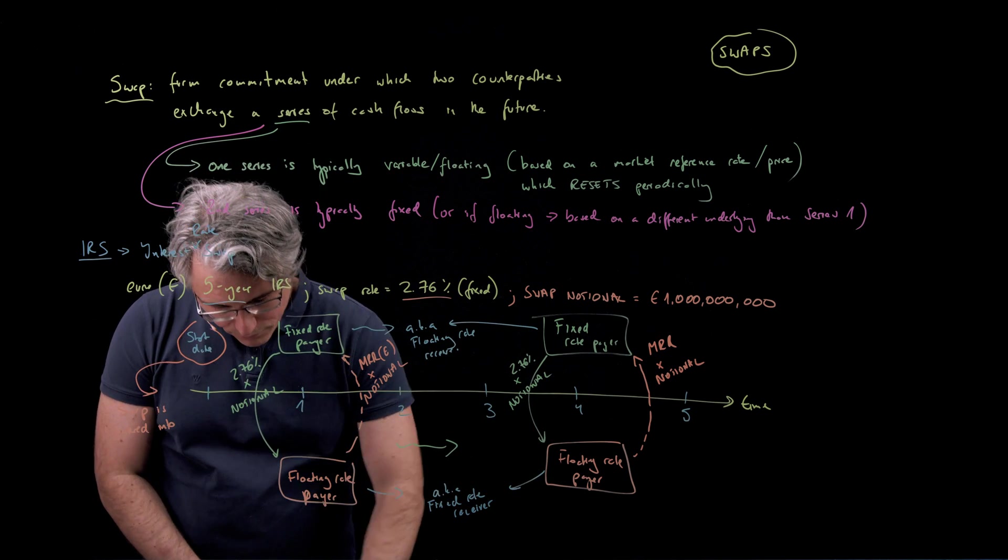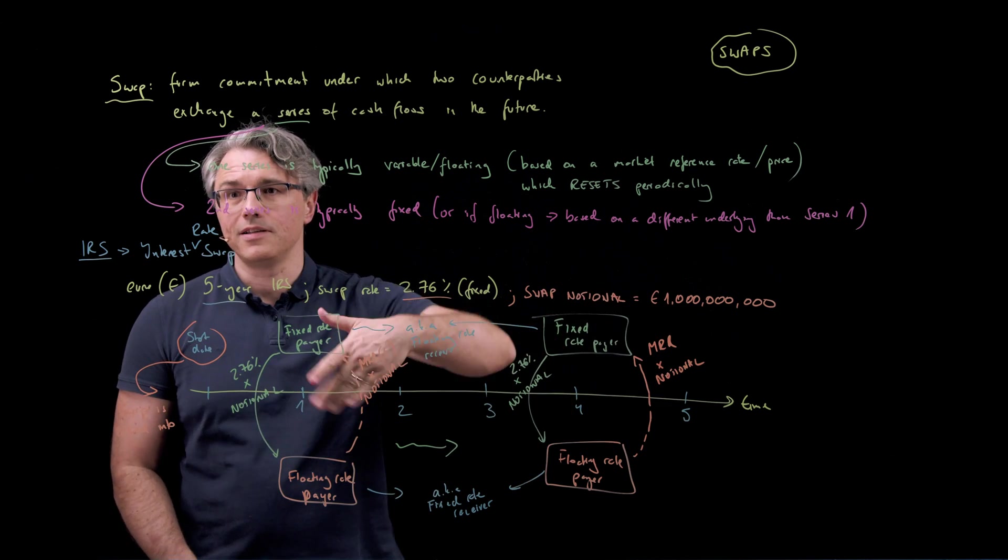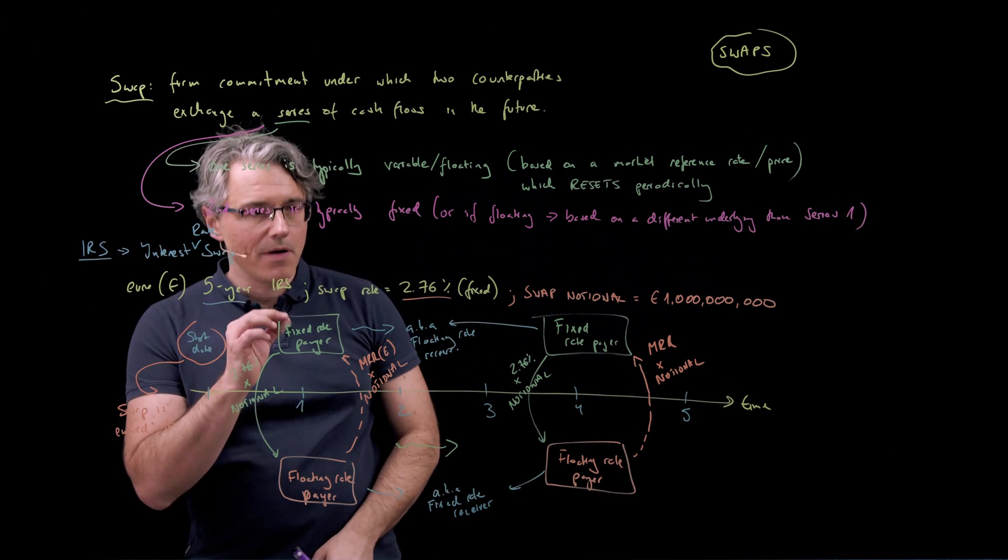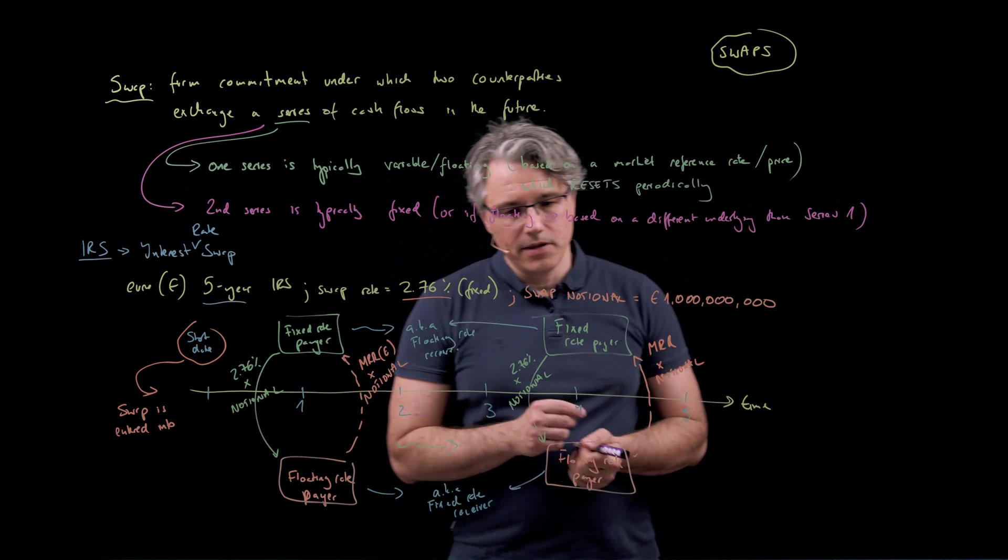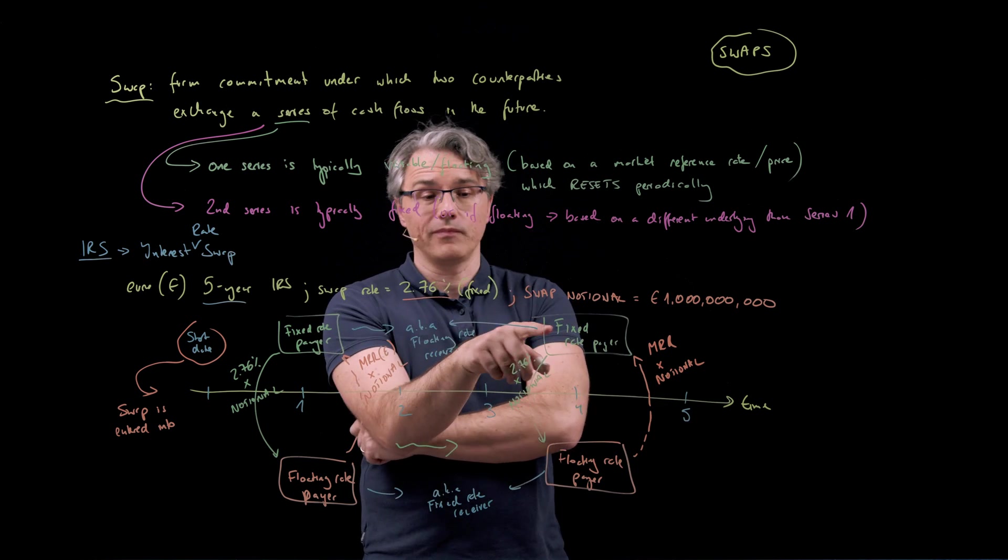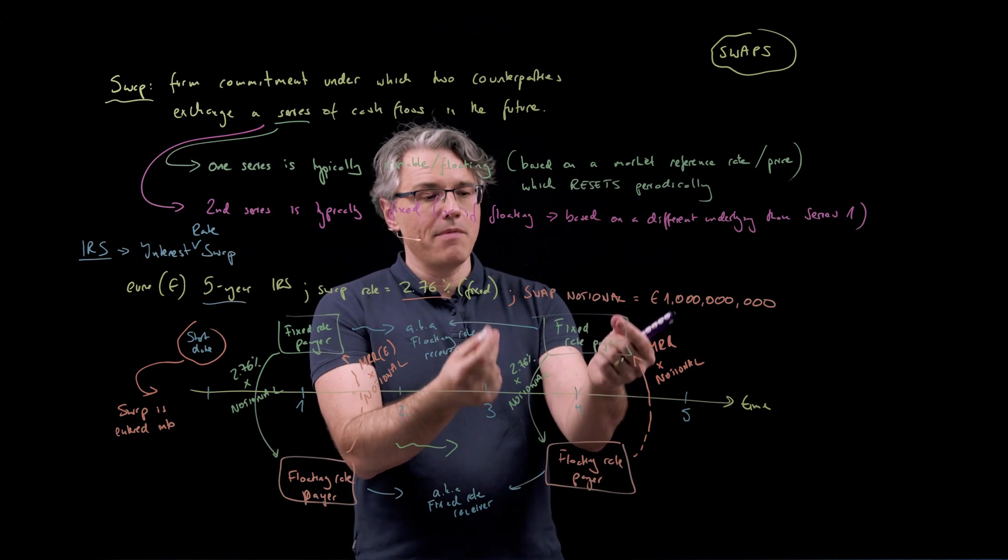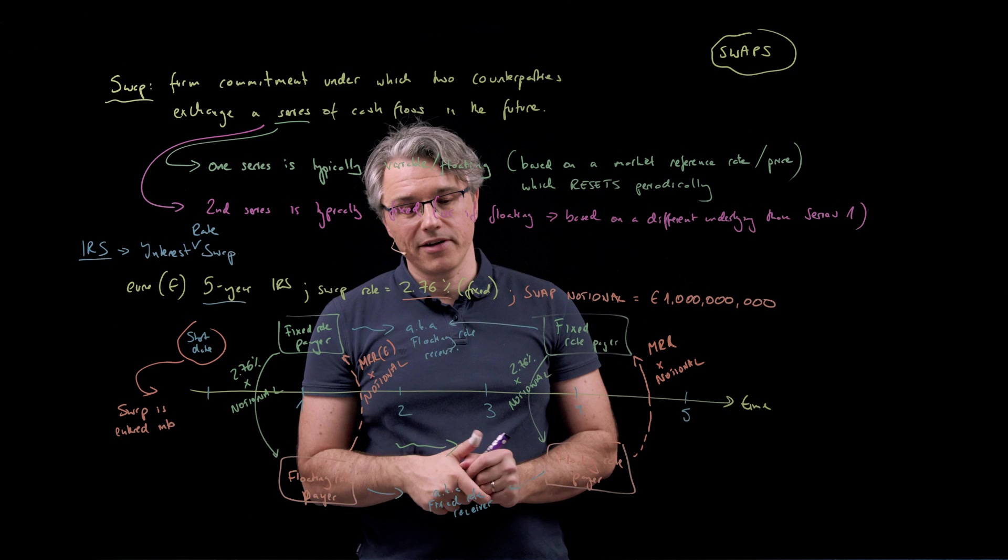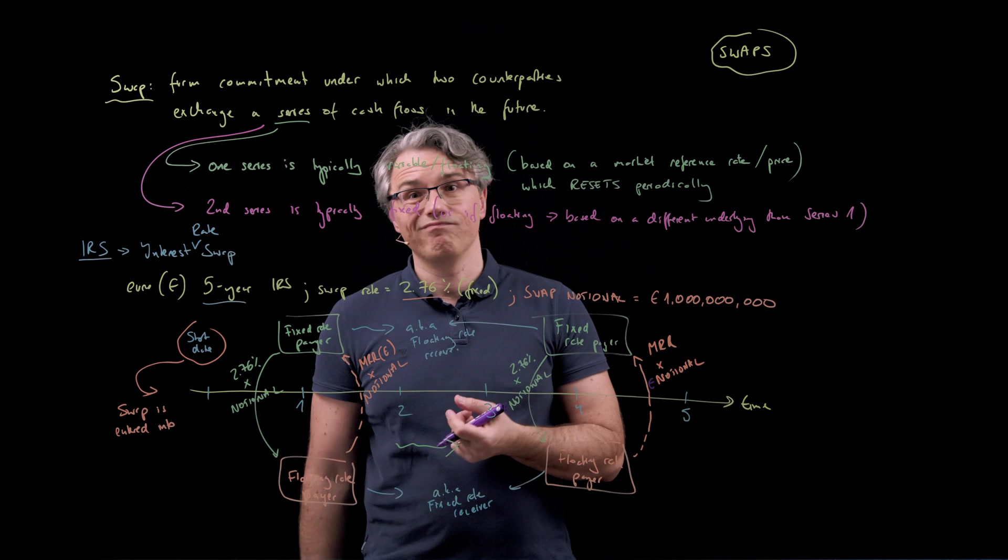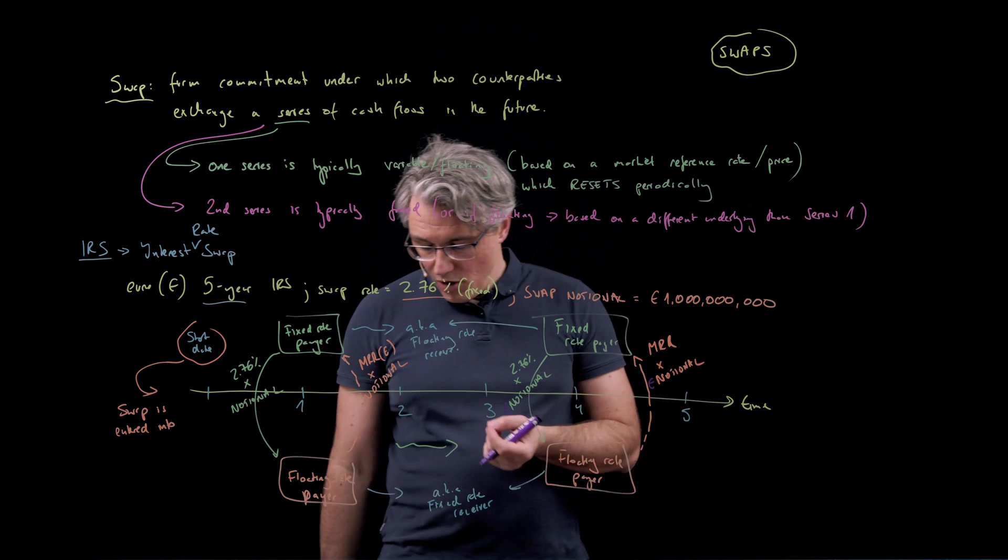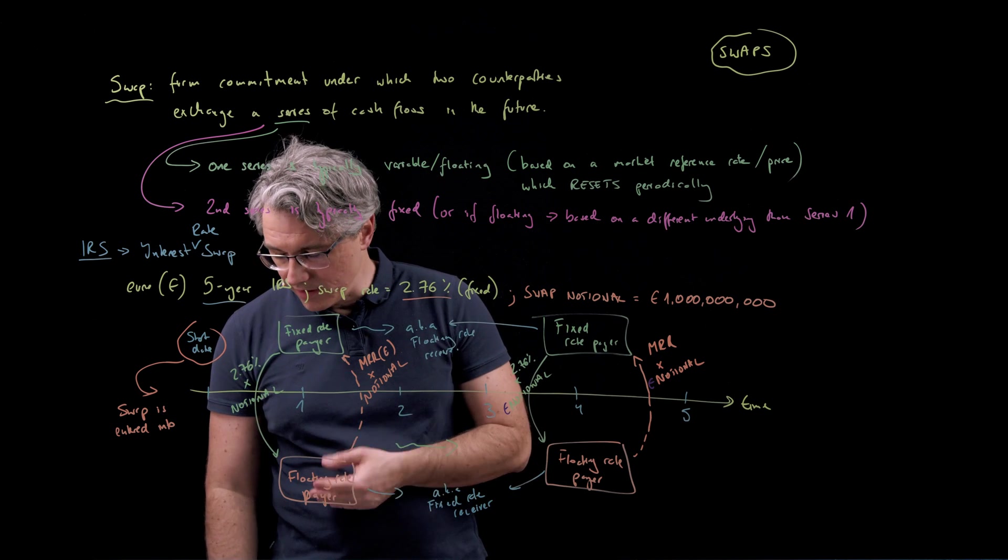Now, a very important idea behind the swap is that it gets repeated, this settlement gets repeated many many times over, but when you perform the settlement you don't pay one series and receive the other. If both amounts are expressed in the same currency like here we've got a percentage multiplied by a euro denominated notional, what's going to typically happen is you're going to have net settlement and that's the norm.